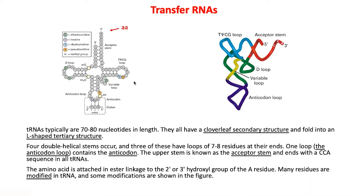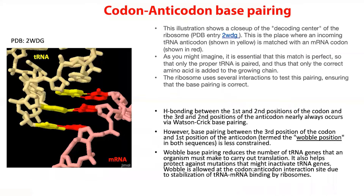A high-resolution structure from the Protein Data Bank shows the mRNA on the right and the tRNA on the left. The tRNA has three anticodon bases, and the mRNA has the codons. Watson-Crick hydrogen bonding between the codon and anticodon is clearly visible. This recognition is critical: once the correct tRNA is matched, it carries the amino acid encoded by that codon, which will then be ligated to the next amino acid according to the mRNA sequence.